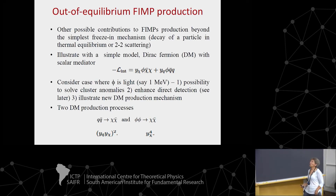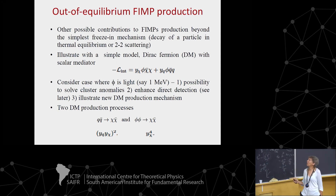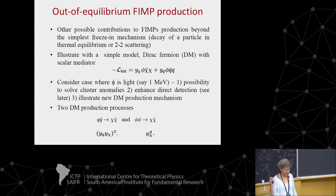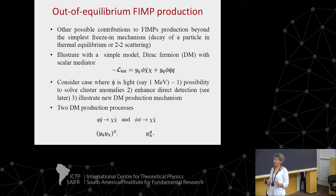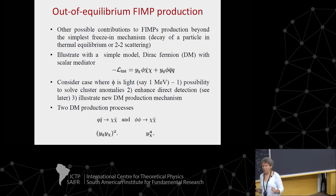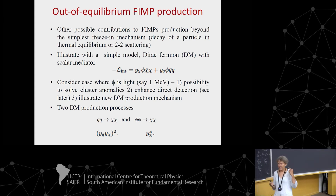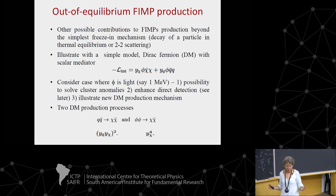Let me move on to something more novel: other possible contributions to FIMP production beyond the simple freeze-in mechanism. I will use another simple model with a Dirac fermion and a scalar mediator phi — not the Higgs, but a new scalar field. I assume this scalar couples only to dark matter and to a light quark. I consider the specific case where this mediator phi is very light, say 1 MeV. Motivations include: it can address the cluster anomaly, it can enhance the direct detection rate, and it illustrates a new dark matter production mechanism.